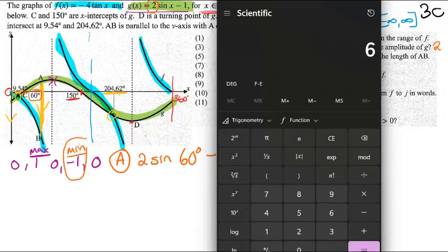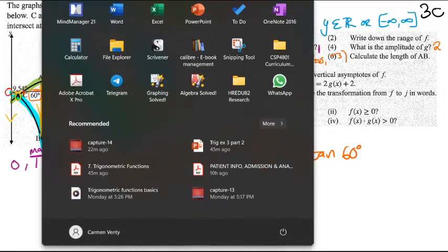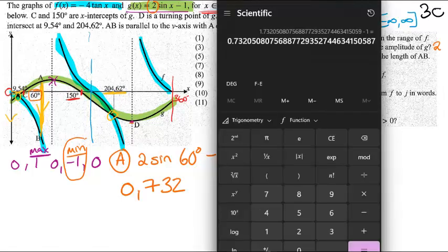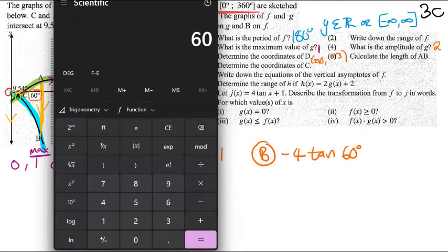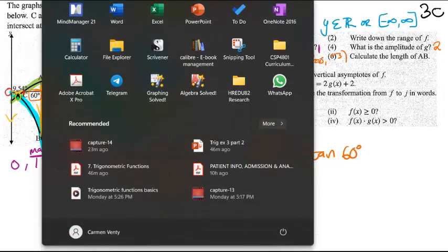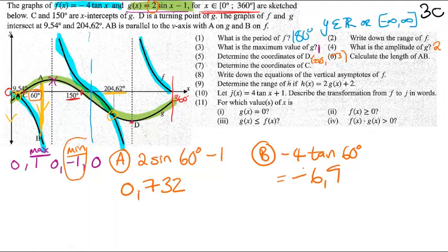And you can say, I'm going to say 60. Again, my order of doing this is different to yours. Minus 1 gives me a total of 0.7, 0.7, 3, 2, okay, 3, 2. And then I do the same, negative 4 tan of 60. So I'm going to say 60 degrees, tan, times negative 4, and that gives me a total of negative 6, hold on, negative 6.9282, negative 6.9282.